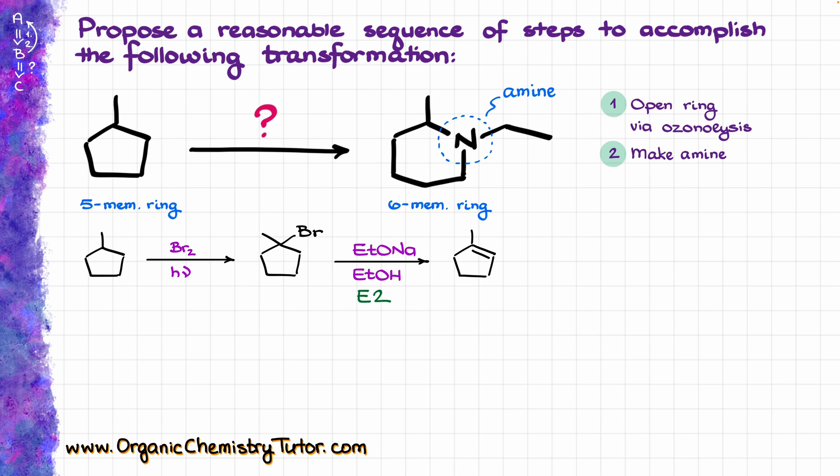Which is going to give me the following product over here. Now, next, I'm going to do a simple E2 style elimination that gives me my alkene, and now I can do the ozonolysis to open up my ring, and just to make sure that I didn't lose any carbons when I was redrawing my molecule over here, I'm going to count them up real quick.